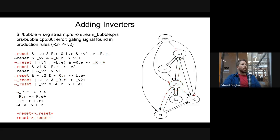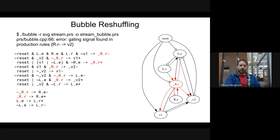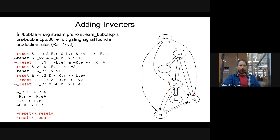Next we need to actually place these inverters in our production rule set. We can create the inverted version of reset and then replace all inverted terms in production rules as needed. Notice it is replaced for everything but v1 — reset is not replaced in v1. That's because we have a bubble on the incoming terms for reset for everything but v1: for underscore r we have a bubble, for LE we have a bubble, and for underscore v2 we have a bubble. V1 is the only one without a bubble.